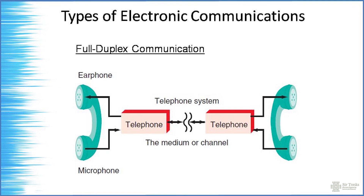When both sides can transmit and receive simultaneously, it is called full duplex — like a telephone line, where both parties can talk and hear at the same time. Full-full duplex goes further: one source and many receivers who can all transmit and receive simultaneously, such as video conferencing or webcasting where one person broadcasts and many participants can join and chat at the same time.